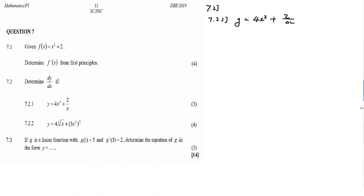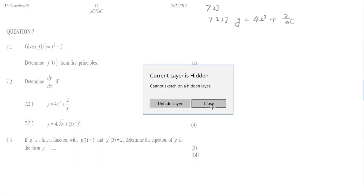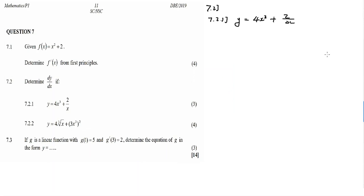Now 7.2. Determine dy over dx if 7.2.1. This is the first question under 7.2. We want to find the first derivative if the function y is given as 4x cubed plus 2 over x. When you differentiate, you don't want roots, you don't want fractions.